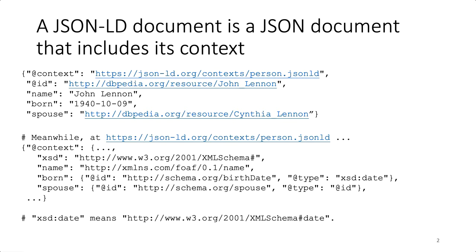If we resolve the @context link, we get a map of vocabulary terms to URIs that in turn have more information. Our processor might already know about XML schema data types and doesn't need to follow that link to know what to expect for date formatting. We see that the spouse field is to be interpreted not as a general string value, but as a URI, given the @type directive in the context. JSON-LD is a great way to ensure that a JSON data set's context travels with the data, whether served via a document database like MongoDB, or via a web API that returns requests for data as JSON responses.